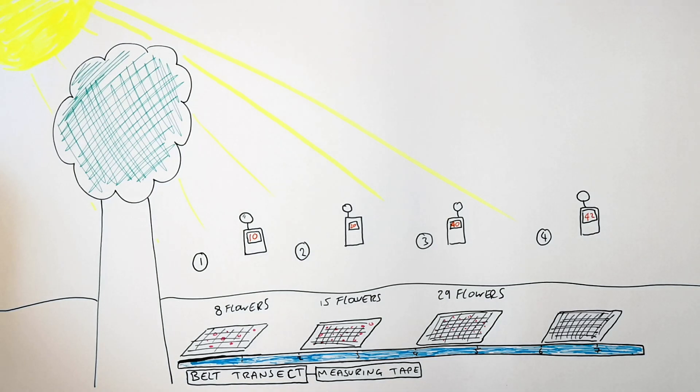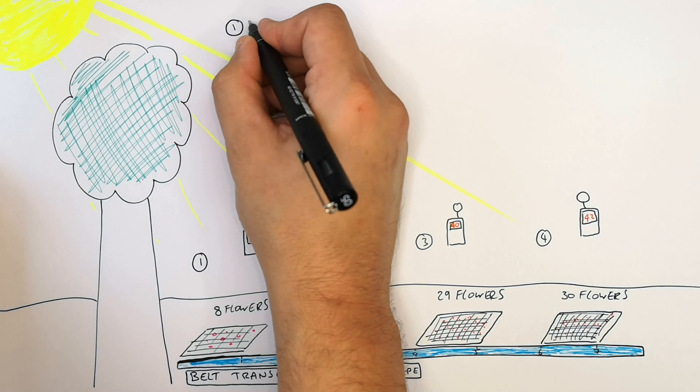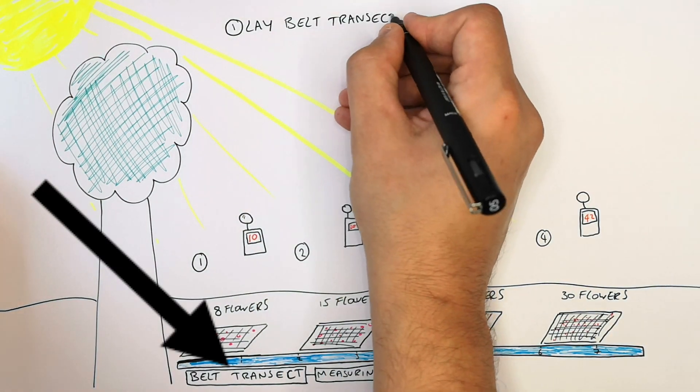In this case the light intensity is 42 and there are 30 flowers. So the method for using a belt transect which is systematic sampling is as follows. You lay the belt transect which is a measuring tape.